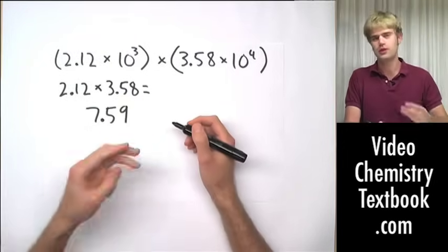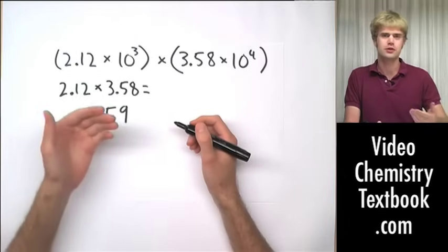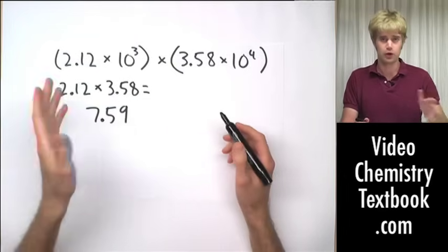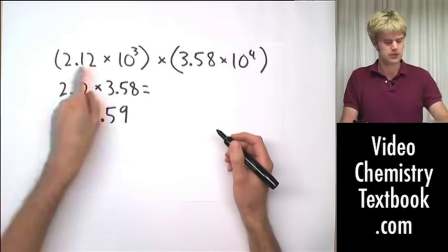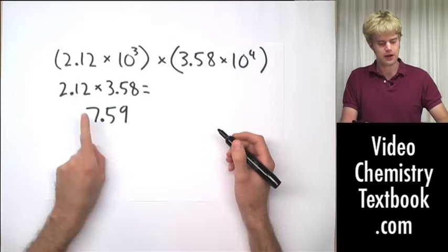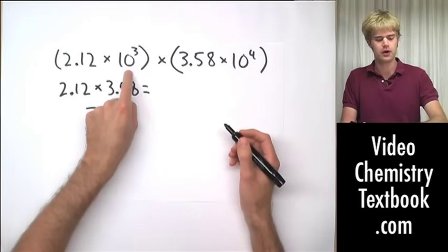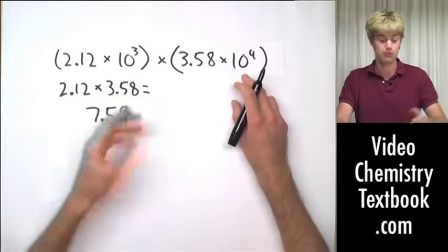I'm just going to round all of these to three digits, but after you look at the significant figures videos you'll learn how to do the exact rounding. Coefficients multiplied together we get 7.59. The next thing we want to do is take these 10s raised to the power and multiply them together.